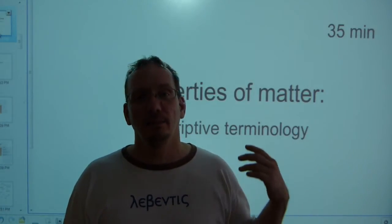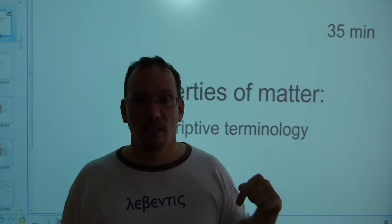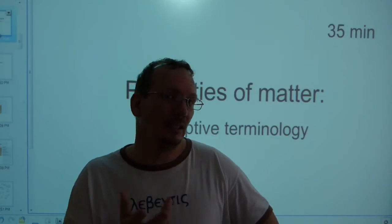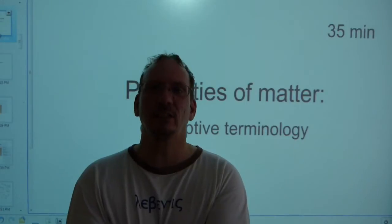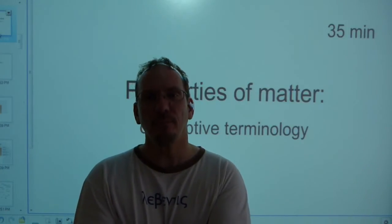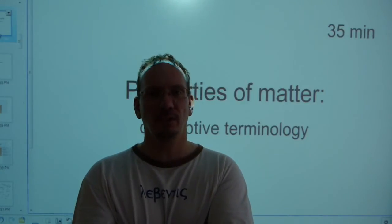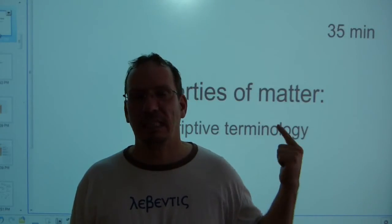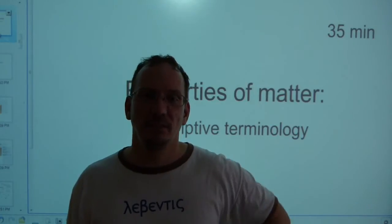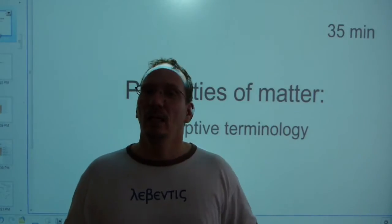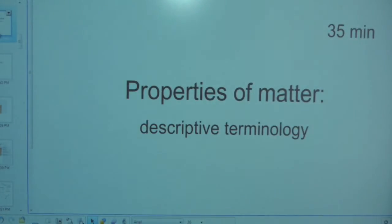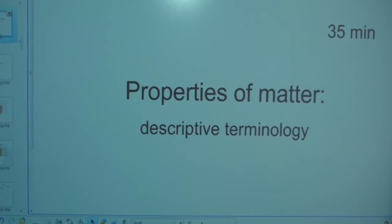We're doing words and languages. English words like ductility are not really English — they're Latin. English has a lot of loan words, especially for scientific content, from French, Latin, and Greek. That's why I have some characters from the Greek alphabet on my t-shirt. We'll deal with one Greek letter today as it relates to one of the properties of matter. This video is about organizing words that you already know. It's going to be about 35 minutes from here. Let's get started.